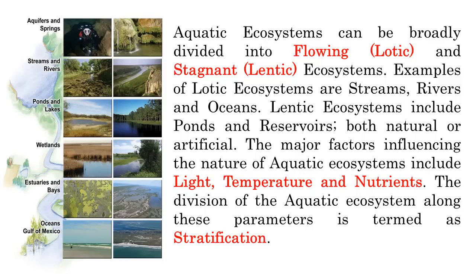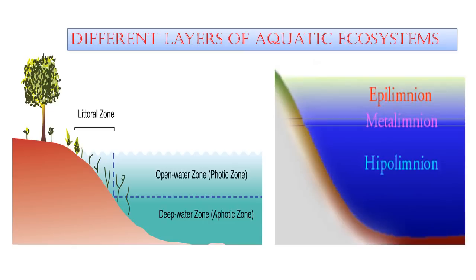Aquatic ecosystems can be broadly divided into flowing lotic and stagnant lentic ecosystems. Examples of lotic ecosystems are streams, rivers and oceans. Lentic ecosystems include ponds and reservoirs, both natural or artificial. The major factors influencing the nature of aquatic ecosystems include light, temperature and nutrients. The division of the aquatic ecosystem along these parameters is known as stratification. This photo shows the way in which the aquatic body is divided into different layers or strata, a process called zonation or stratification.